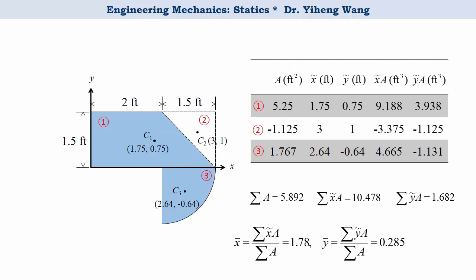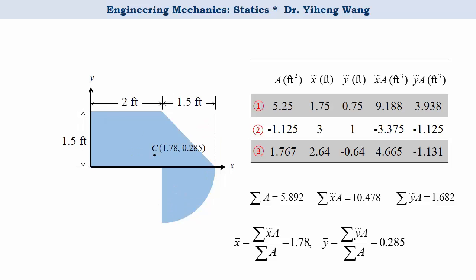We put the information into this table. Note this time, component 2 has a negative value for its area. So adding area 2 is essentially the same as subtracting the area of this triangle. Through calculation, we will get exactly the same location for the centroid of the composite area.